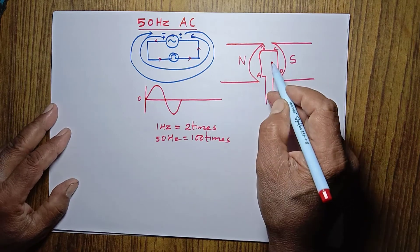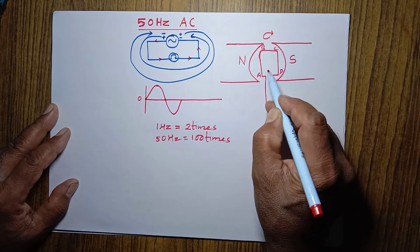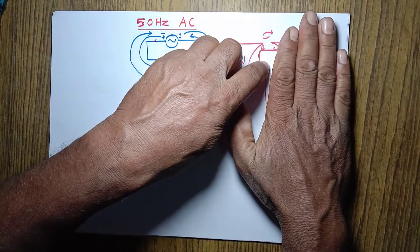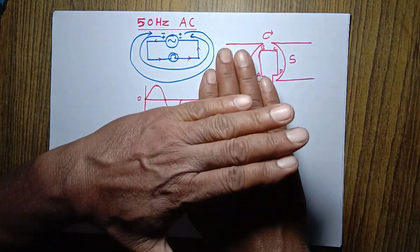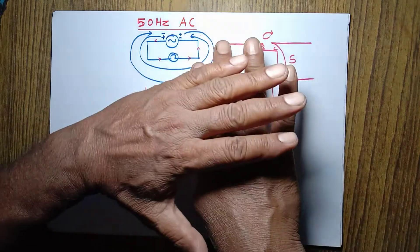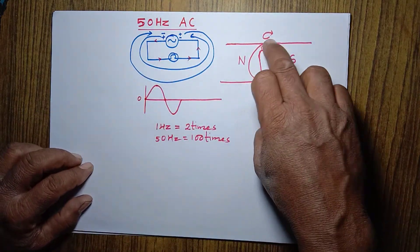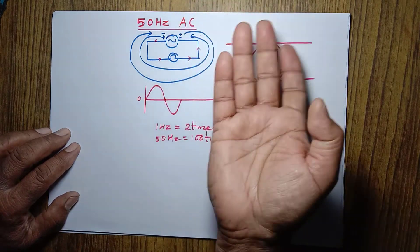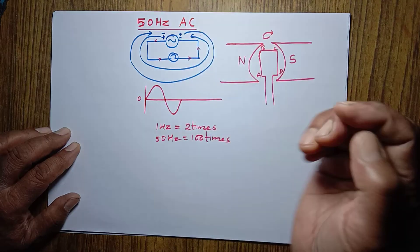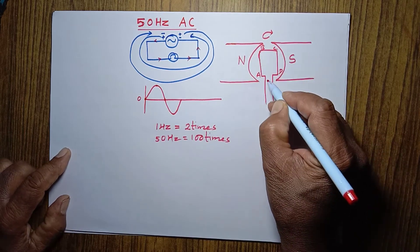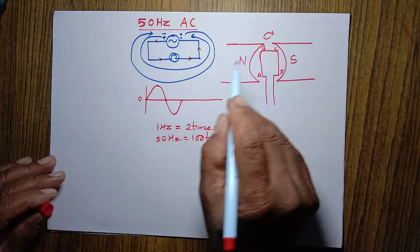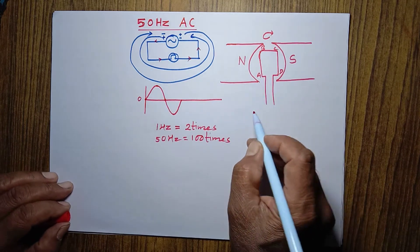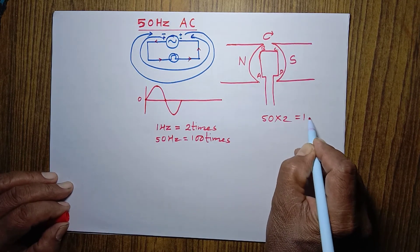The coil keeps on rotating. When it rotates, side AB crosses the magnetic lines of force — which run from north to south — in one direction, and the current direction is A, B, C, D. But when the same AB side comes up and goes back down, it crosses the magnetic lines of force again in the downward direction, and the current direction becomes D, C, B, A. So in one rotation, the direction of current changes twice. In 50 rotations, that is 50 hertz, the direction changes 50 times 2 — which means 100 times.